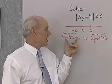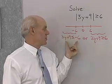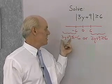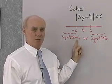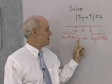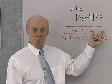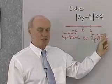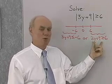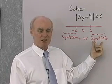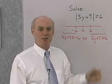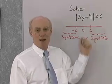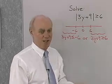3y plus 9 could be down here, in which case its distance from 0 is more than 6 units, so 3y plus 9 is less than or equal to negative 6. Or 3y plus 9 could be up here, and its distance from 0 is still more than 6 units, so 3y plus 9 is greater than or equal to 6. Now I'll simply solve these two inequalities to get my solution set.